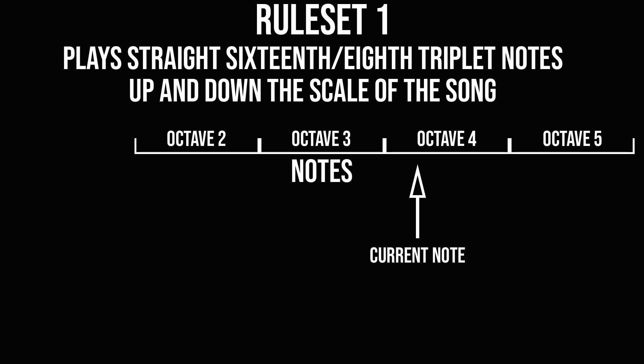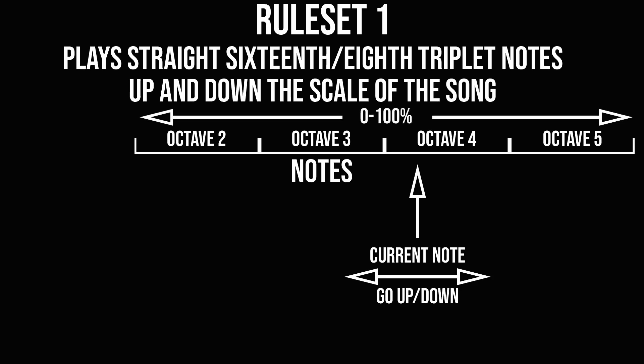But what happens after that? We don't want our friend to just stay there forever, so he needs to go either up or down the scale. It can just be a random 50/50 chance, but let's make it a bit more exciting. We don't want him to get stuck playing either really high or really low notes — we want him to stay around the middle. So let's give him a slightly higher chance of going up when he's at the low end of the scale, and a slightly lower chance of going up when at the high end. We calculate a percentage value of zero to a hundred percent of how far up the scale he is, and then use that to lerp between two values.